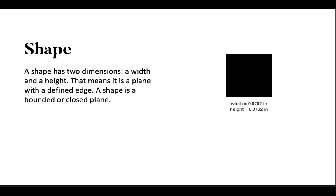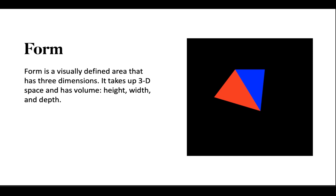When a shape takes on a three-dimensional space, it is said to be a form or have space and volume. Form is a visually defined area that has three dimensions. It takes up three-dimensional space and has volume, a height, width, and depth. Form has volume and is the three-dimensional expression of shape. A form is the total of all its shapes.